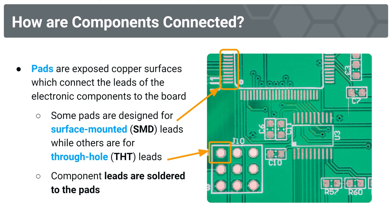The distinctive factor being through-hole leads go through the PCB. This is a drilled hole with an exposed copper surface pad that you would solder a through-hole lead to, whereas surface-mounted pads are just on the surface of the PCB. A component's leads would be soldered to this — it wouldn't go through the board. So we have SMD pads and through-hole or THT pads.